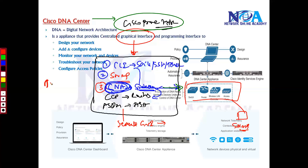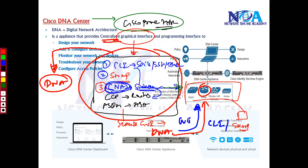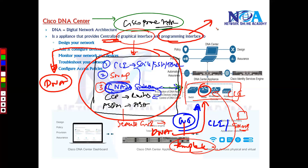With Cisco DNA Center, all management is centralized in one place. You can initiate a Telnet session via command line or manage via GUI — pushing configurations through the GUI interface itself without needing a separate GUI per device. Templates are created in the GUI and executed as CLI commands on the devices, providing a programming interface where templates are deployed as normal CLI commands.